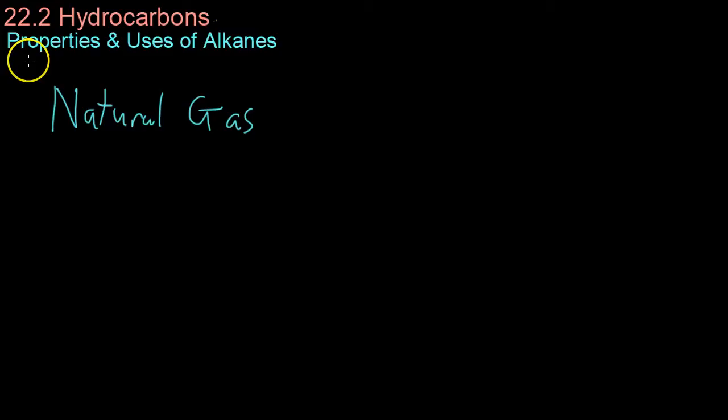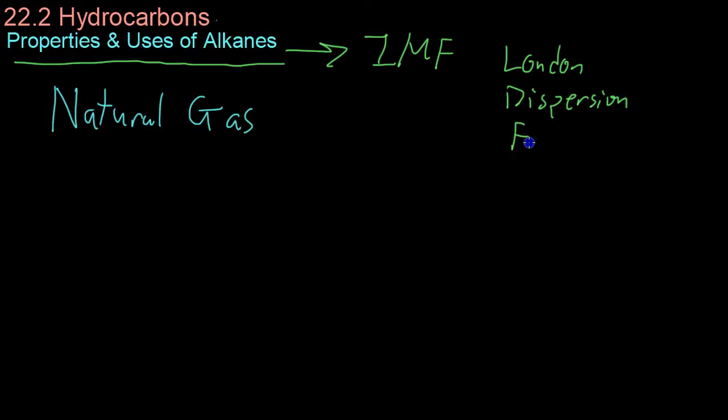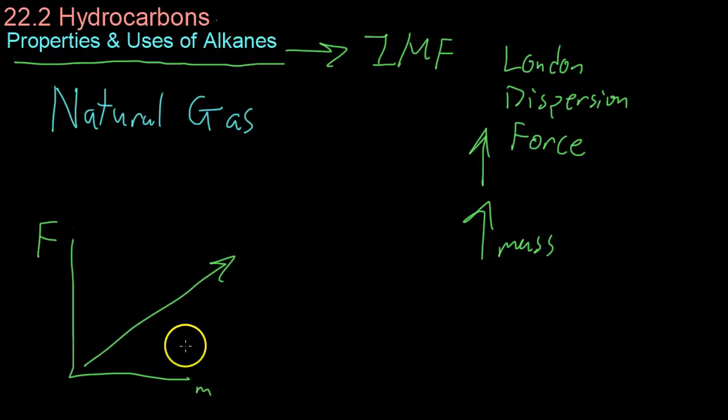The last thing we're going to be looking at in this video are the properties and uses of alkanes. And, what you have to realize is that the main intermolecular force that governs alkanes is what is known as the London dispersion force. Which we talked about earlier in this video series, pertaining to intermolecular forces. But, what you have to realize is that the London dispersion force increases as you add mass. So, the London dispersion force, which basically holds the molecules together, gradually increases as you increase the mass of molecules.